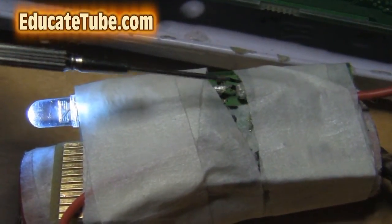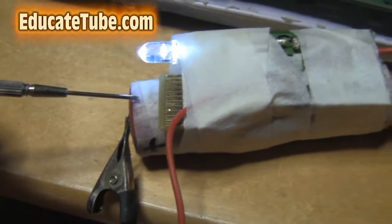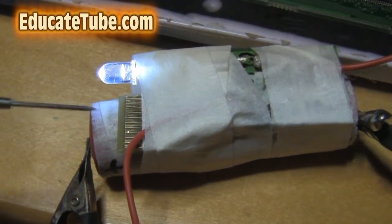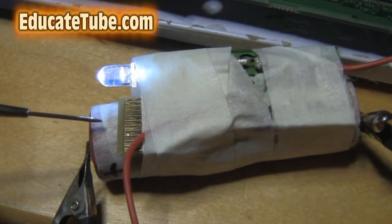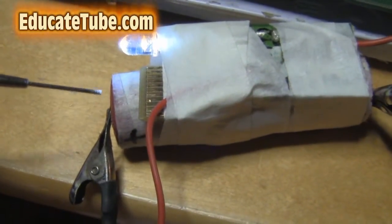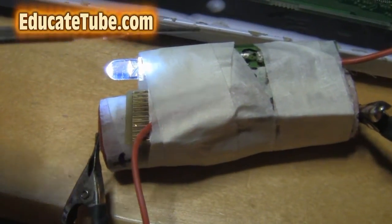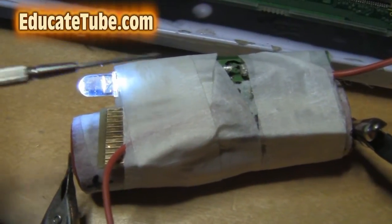This is a 3.7 volt battery, but I charge it to 4.1 volts when fully charged. You can see it's hooked up to this LED light and connected to the tiny resistor - I call it a micro resistor - from this circuit board. It's working really well.